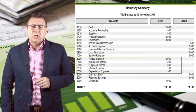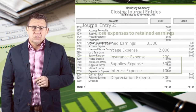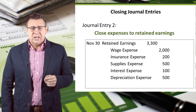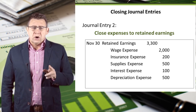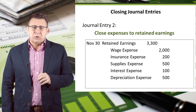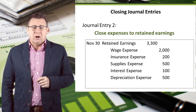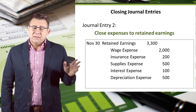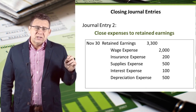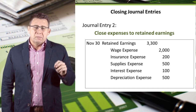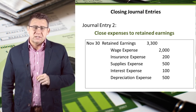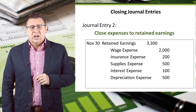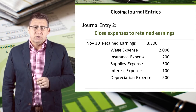Next, we will close expenses. The second journal entry is to close expenses to retained earnings. We record our expenses separately in the journal entry because each account needs to be zeroed out, as you can see in the example. Retained earnings is then debited for the total amount of the expenses. After posting this journal entry, all of our expenses will be zeroed out.